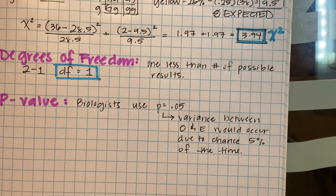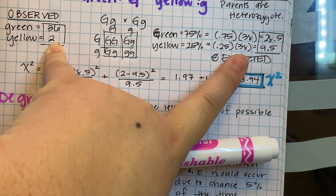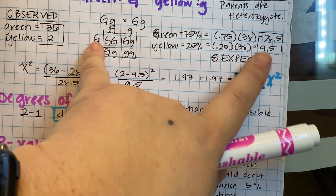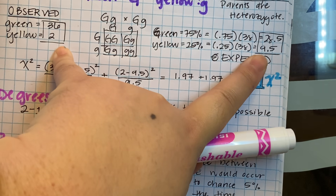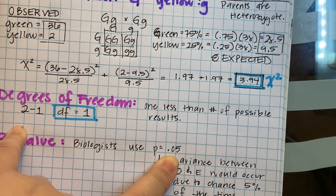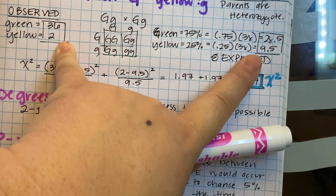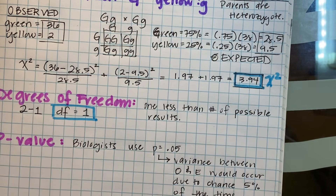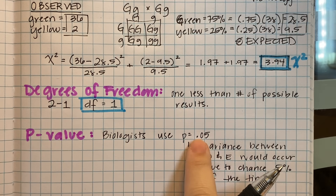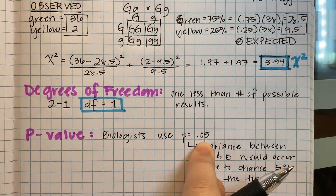Any p-value less than 0.05 means the difference between the values is due to another factor, not randomness. If your p-value is 0.05 or greater, we fail to reject the null — we accept the null. If your p-value is less than 0.05, we reject the null, meaning some other factor is causing the discrepancy. We always work in the p equals 0.05 row — always — because this is the biologist's limit, so it's always our home row.